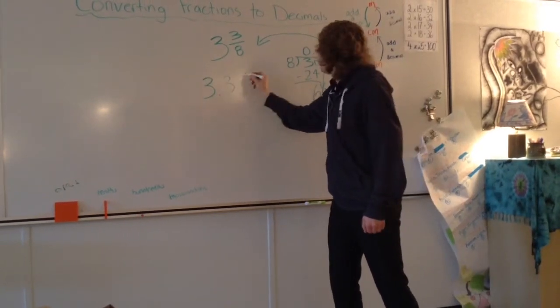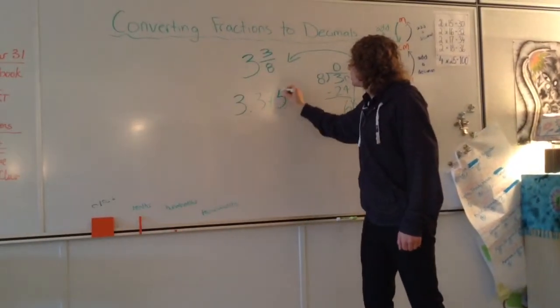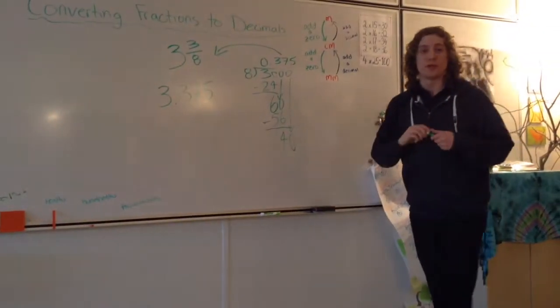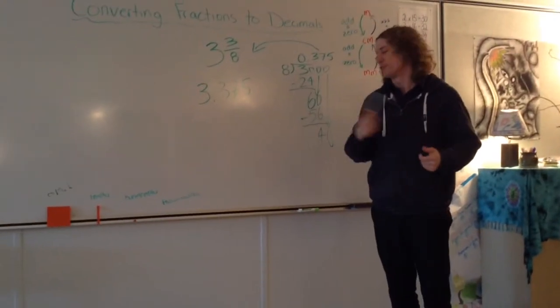So 3 and 3/8 converted to a decimal is equal to 3.375. Thank you very much for your time and have a wonderful day.